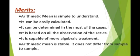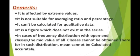These are the main merits of arithmetic mean. Next, we are moving on to demerits of arithmetic mean. It is mainly five points. First, it is affected by extreme values.